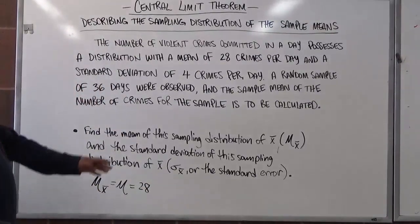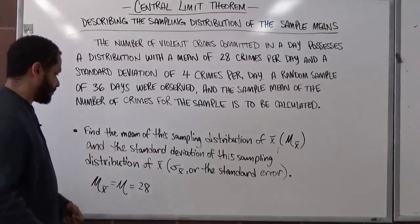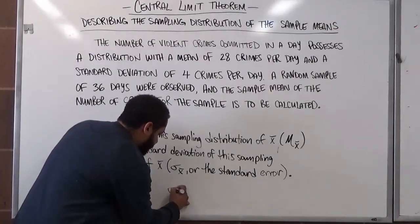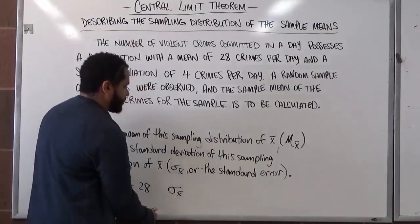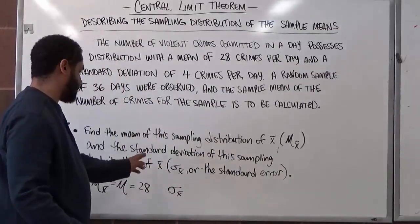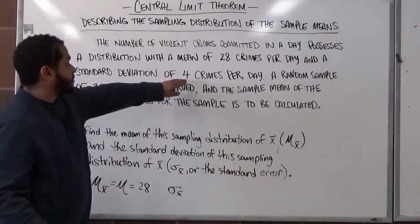And to get our standard error, which is also the standard deviation of the sampling distribution, we have σ x bar. And this one is actually going to undergo a little bit of a change because the standard deviation of the sampling distribution is always less than the actual standard deviation.